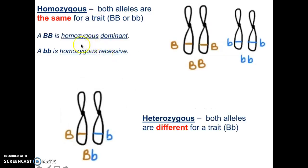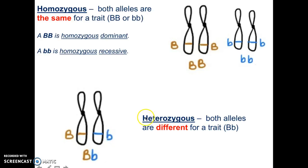Homozygous versus heterozygous — this is very important. A homozygous individual has alleles that are both the same for that trait. So big B big B, or little b little b — those are homozygous. If it is big B big B, this is homozygous dominant. If it is little b little b, we call this homozygous recessive. If it is heterozygous — hetero means different — both alleles are different for that trait, so it is big B little b. This is someone that has both alleles: a trait for brown eyes and a trait for blue eyes.